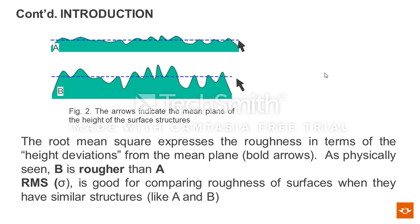When we talk about root mean square roughness, we are basically talking about the roughness expressed in terms of deviations from a mean plane. As shown in figures A and B, the mean of the heights of these rough surfaces are shown by the blue line. Root mean square roughness is good for comparing roughness of surfaces when they have similar structures, like A and B.